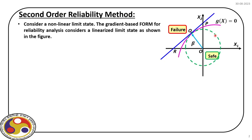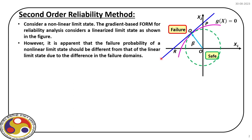In our first order reliability analysis, we started with a limit state shown by the pink line on screen. This nonlinear limit state was replaced by a blue line, which is a linear approximation of the original limit state. Our main objective was to find the point on this blue line nearest to the origin in the standard normal space, using a gradient-based approach with Lagrange multiplier technique. The moment we replace the nonlinear limit state with a linear one, we invariably incorporate some error when estimating beta and subsequently probability of failure.